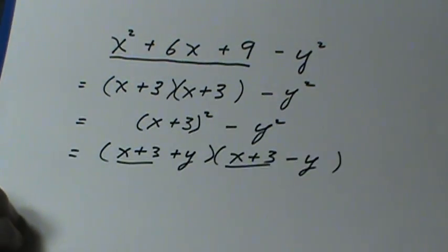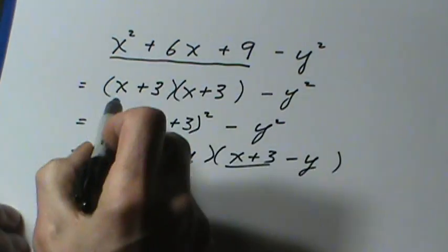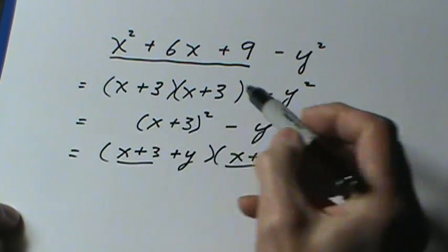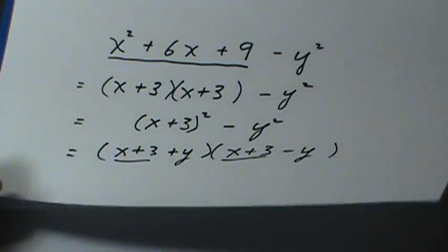So if you see four terms, it's probably a grouping question. Starting out as a perfect square, and then working with the difference of squares.